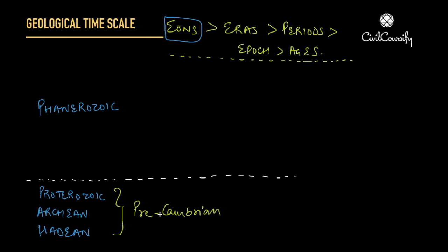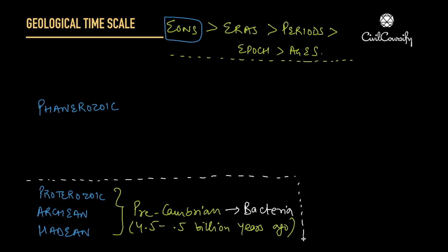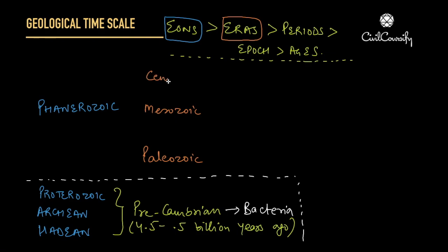Basically, everything between 4.5 billion years ago to 2.5 billion years ago lay in this Precambrian era, and this era was quite famous for the evolution of bacteria. Now our major concern is the Phanerozoic Eon. The Phanerozoic Eon has three eras: the oldest one was Paleozoic, the middle one was Mesozoic, and the latest one — in which we are still living — is the Cenozoic era.